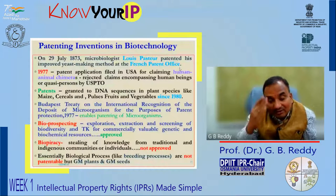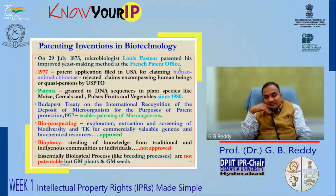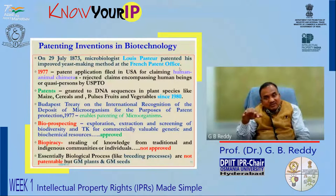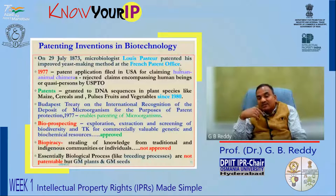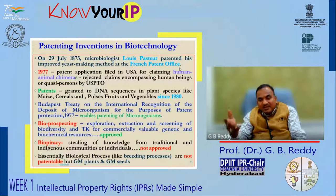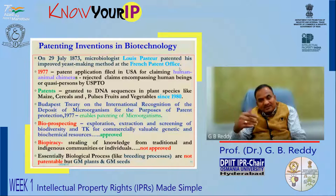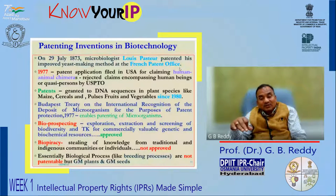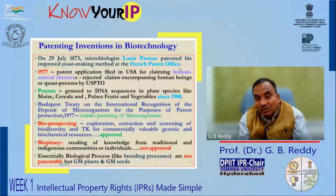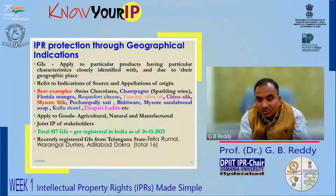Today we are talking about the patenting of life forms. Louis Pasteur was given a patent for an improved yeast way back in 1873. DNA sequences are patented — genes, pulses, fruits, vegetables. There was the famous case of Diamond versus Chakraborty in 1980, decided by the US Supreme Court, after which the activity of patenting in biotechnology got accelerated. Today we are talking about GM plants and GM seeds.